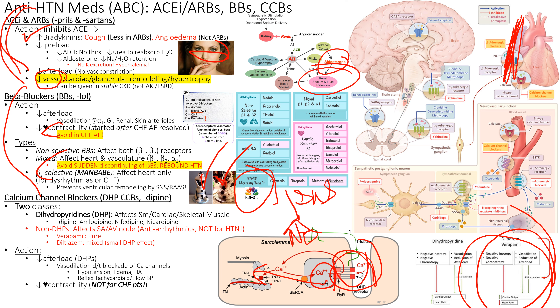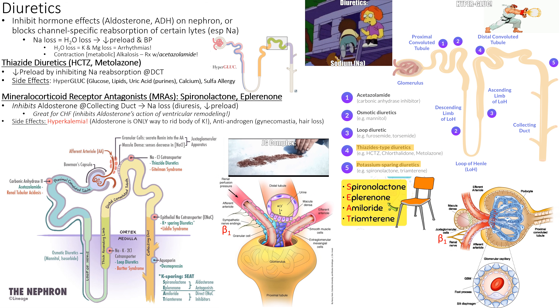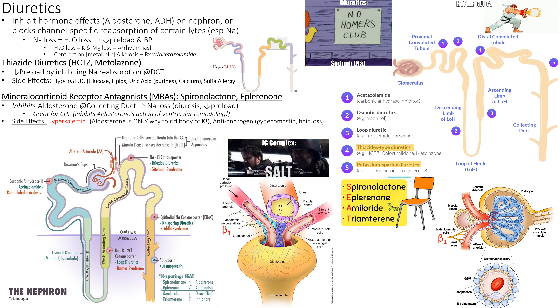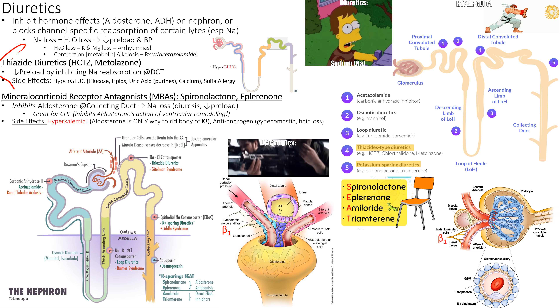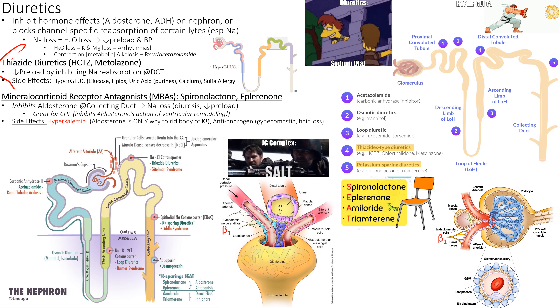DHP calcium blockers decrease contractility in cardiac muscle as well, not just smooth muscle, so don't give them with acute CHF — not even on discharge. All antihypertensives can cause hypotension symptoms. Now moving to diuretics: thiazide diuretics are the ones used with hypertension. All diuretics work by stopping sodium reabsorption in some fashion — if you stop it by inhibiting aldosterone, that's an MRA or mineralocorticoid receptor antagonist.